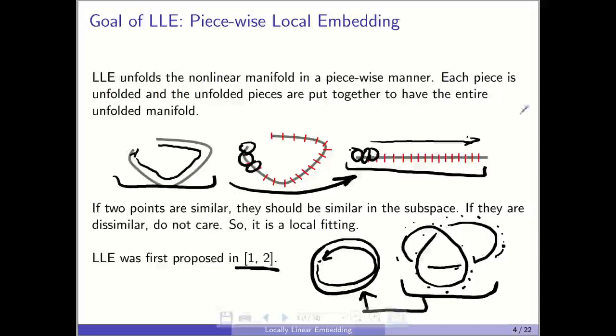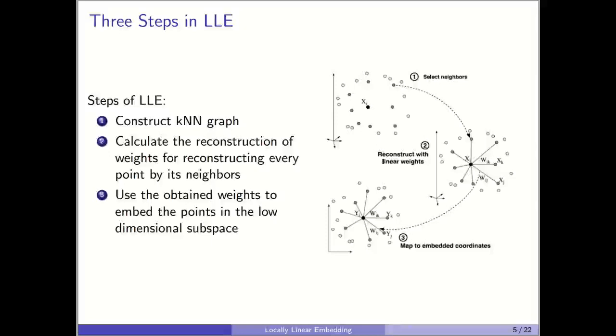We want to unfold the manifold to its intrinsic dimensionality. As I said, local linear embedding uses piecewise unfolding and has three steps. First, it constructs a k-nearest-neighbor graph. For example, in figure 1, it selects the neighbors of every point x_i.